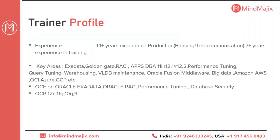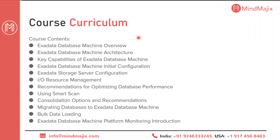Now moving on to what we are going to learn from this training. This course covers the x6 version of Oracle Exadata along with the 12c version of Oracle Database. The topics covered include: Oracle Exadata Database Machine overview — the history, how the product evolved, what the first model was, what the current model is, and how many transitions the box has already seen. We then discuss Exadata Database Machine architecture, and the key capabilities of Exadata, including major features like Smart Scan, Flash Cache, and more.